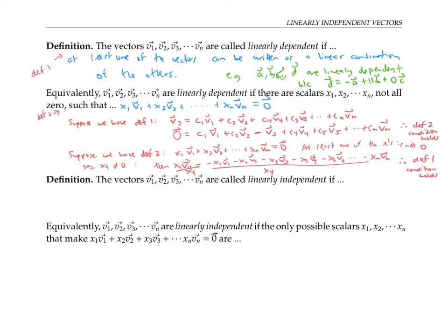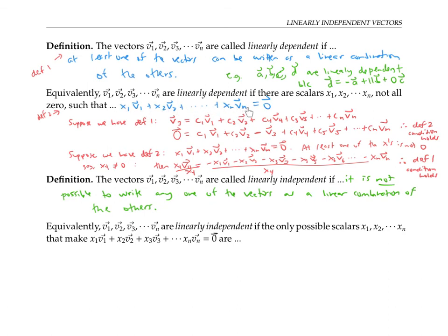So enough about linearly dependent vectors — let's talk about linearly independent vectors. These are vectors that are not linearly dependent. In terms of definition one, vectors v1 through vn are called linearly independent if it is not possible to write any one of the vectors as a linear combination of the others. In terms of definition two, the vectors are linearly independent if the only way to write x1 times v1 plus x2 times v2 plus all the way through xn times vn equal to zero is if all the coefficients x1 through xn are zero.